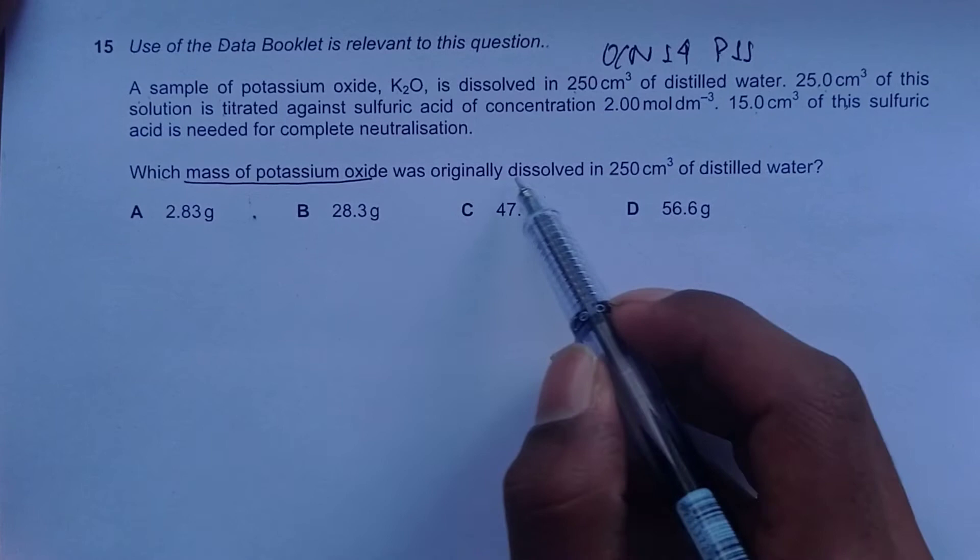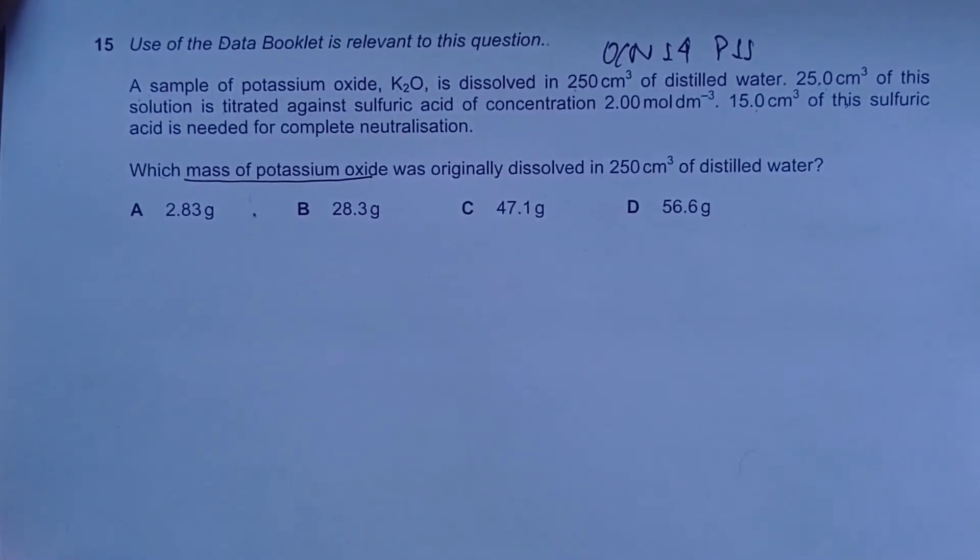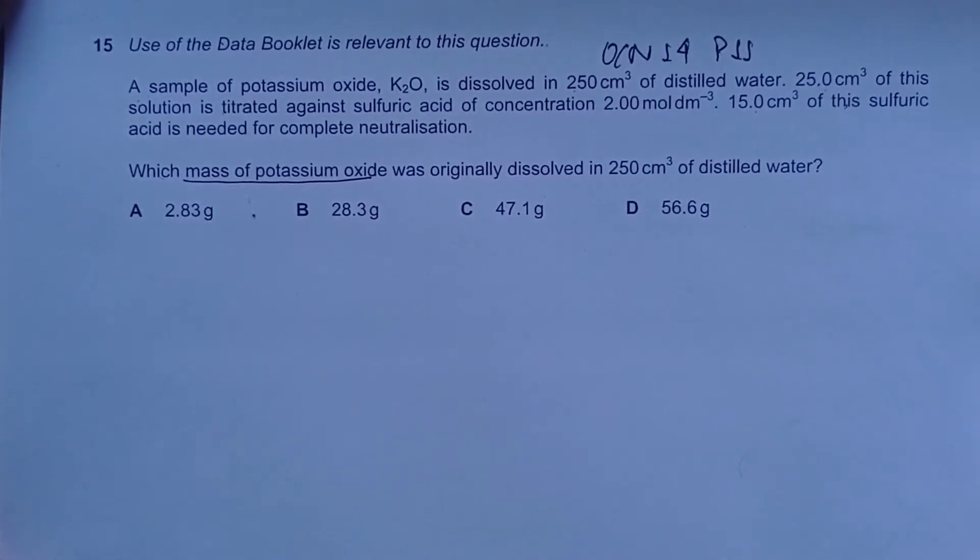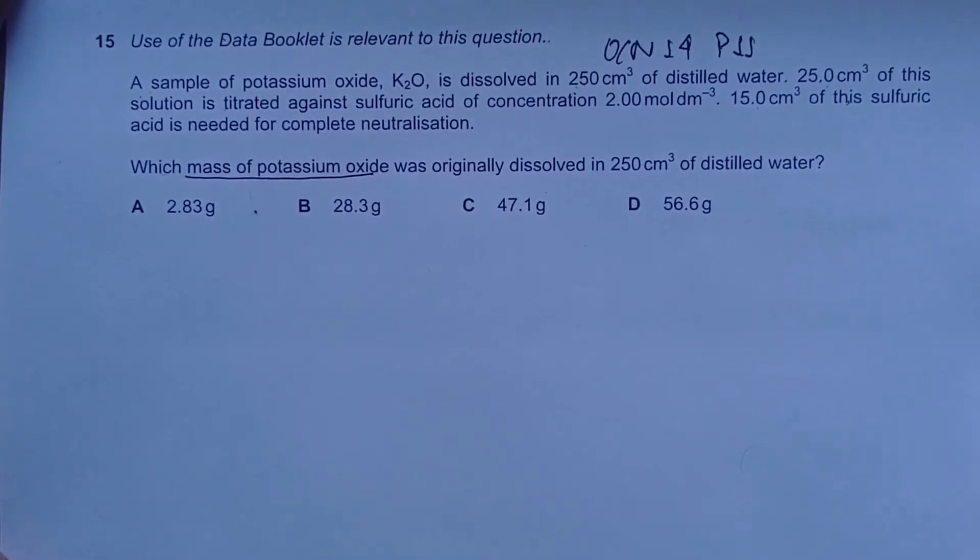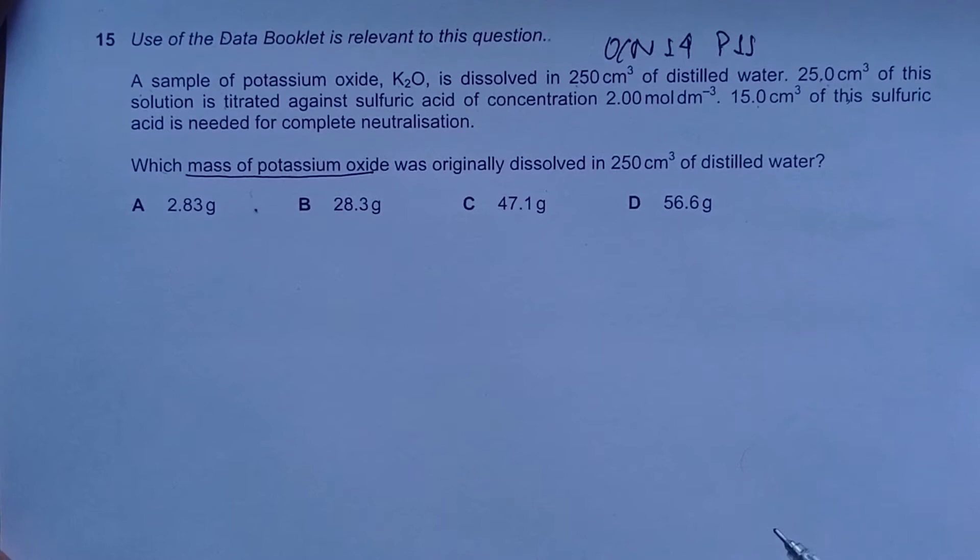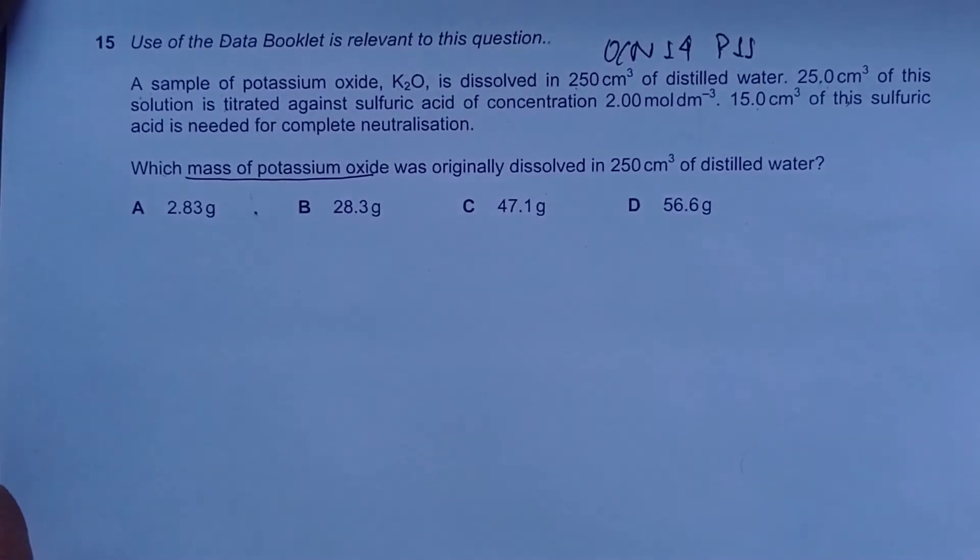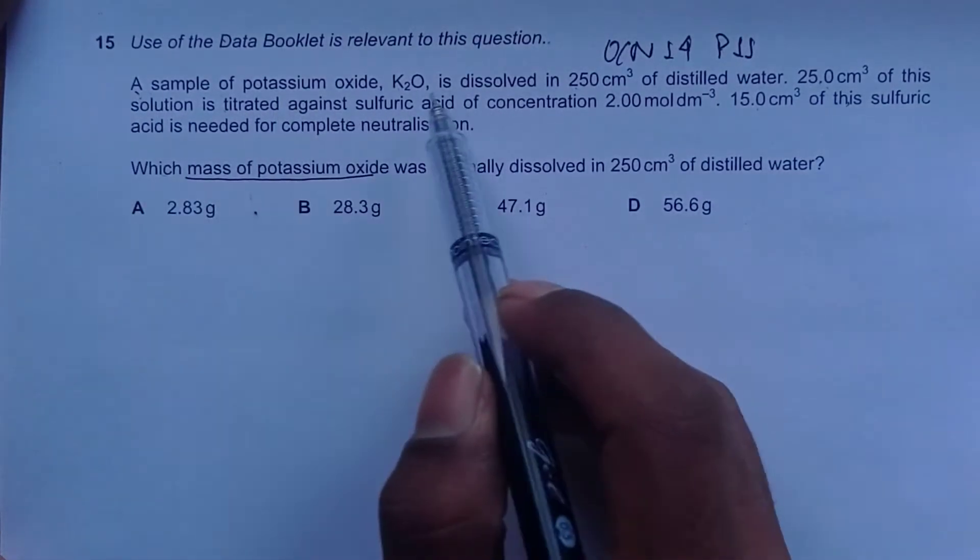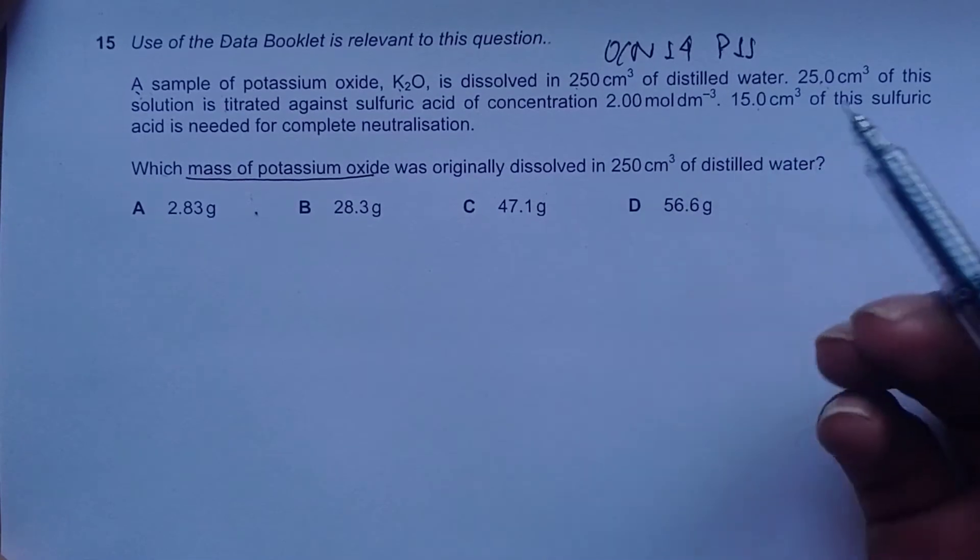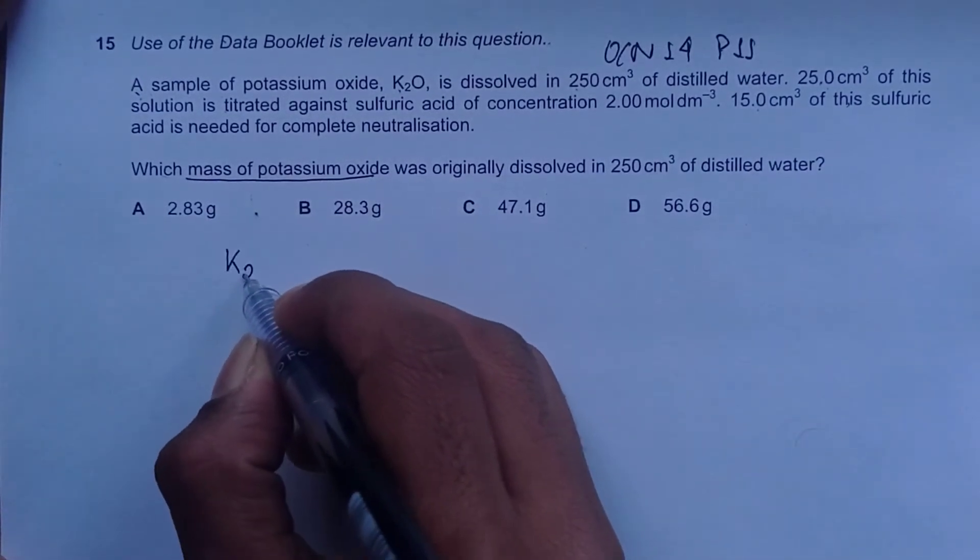15 cm³ of sulfuric acid is needed for complete neutralization. Which mass of potassium oxide was originally dissolved in 250 cm³ of distilled water? This question will help strengthen your chemistry calculations, visualization techniques, and give you tips for paper 3 titration calculations. First, we construct the equation: K2O plus H2O.